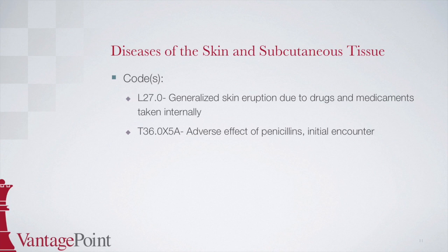There is an instructional note in the tabular which states: use additional code for adverse effect, if applicable, to identify drug — categories T36 through T50 with 5th or 6th character of 5. Therefore, the second code is T36.0X5A, adverse effect of penicillins, initial encounter. To find this code, go to the table of drugs and chemicals in Volume 2 of your ICD-10 book. Look for penicillin, then look across to the column for adverse effect, which gives you a code of T36.0X5.